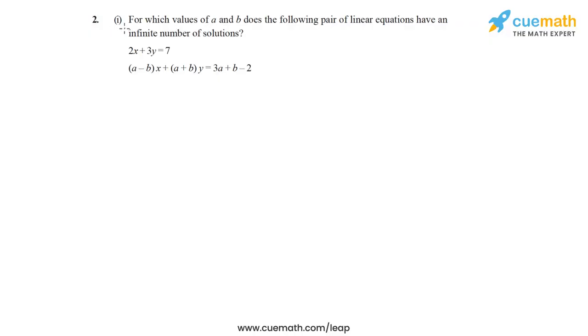In the first part of question 2, the question says: for which values of A and B does the following pair of linear equations have an infinite number of solutions? These are the two linear equations — this is the pair of linear equations, and we want it to have an infinite number of solutions.